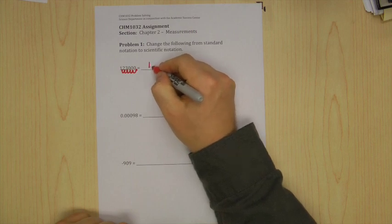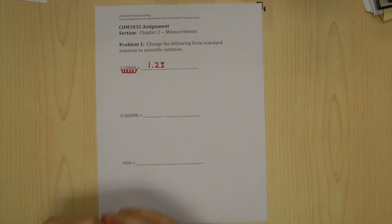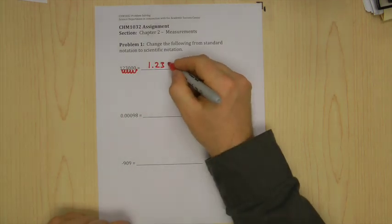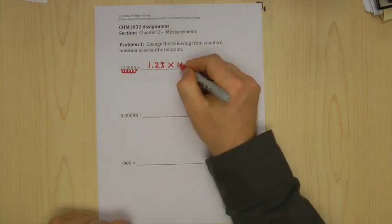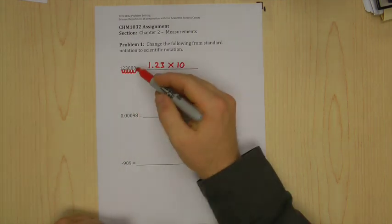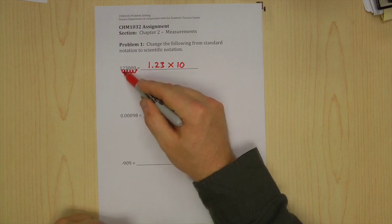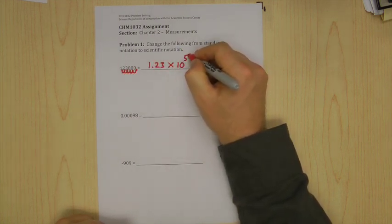Now this is the next part. You write times 10. Every scientific number has that times 10. Now count how many hops the bunny made: one, two, three, four, five. Times 10 to the 5.